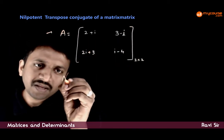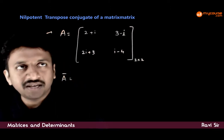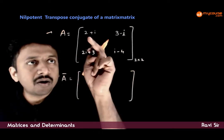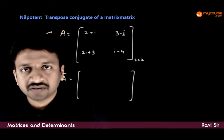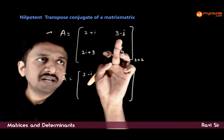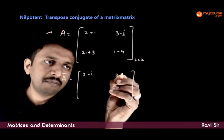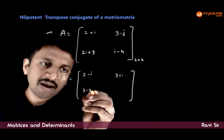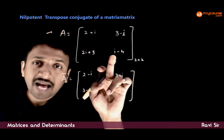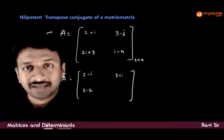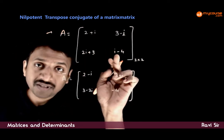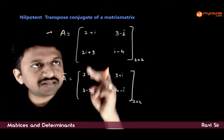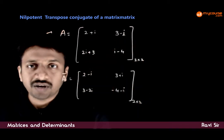We define something called the conjugate of this matrix, which is defined as a matrix containing the conjugates of each of these elements. That is, 2+i becomes 2-i, 3-i becomes 3+i, 2i+3 is the same as 3+2i which becomes 3-2i, and i-4 or -4+i has conjugate -4-i. So this is also a 2 by 2 matrix where each element is the conjugate of the corresponding element of A.